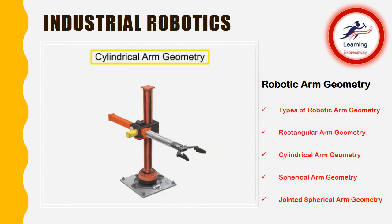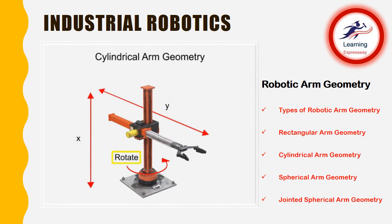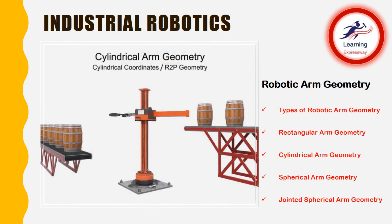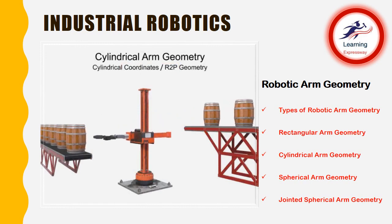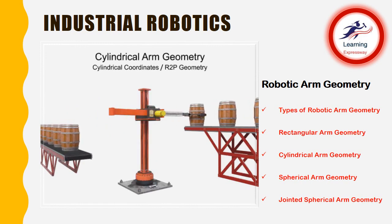Cylindrical arm geometry robots move linearly in two directions and rotate in one other. Since this type of robotic arm moves in two separate prismatic or linear directions and rotates in one direction, it's given the designation of R2P, where the R stands for rotational. This type of robotic arm is most often used in machine tending, assembly, material handling, and palletizing operations.